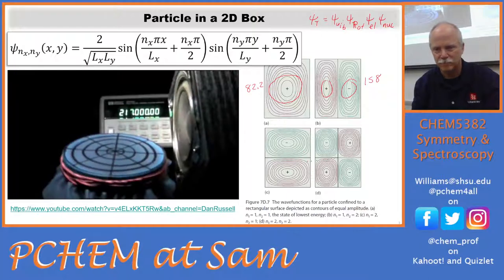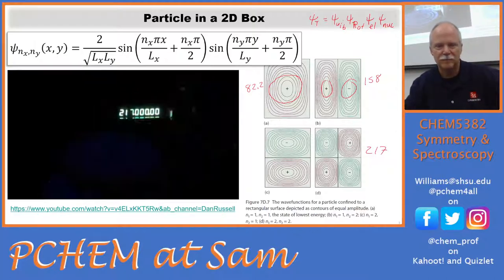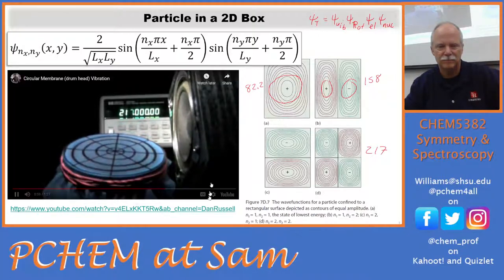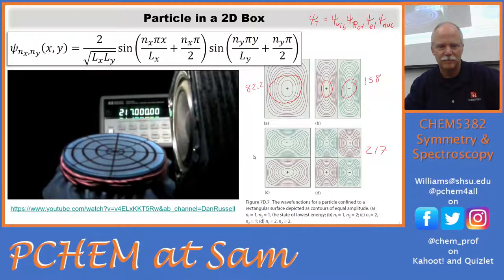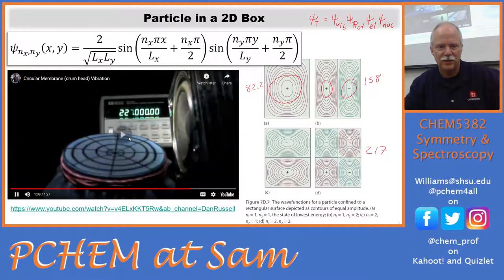Here's the third pattern of the membrane. It's kind of like a cloverleaf pattern — two opposite sides of the membrane move up together, and the adjacent sections move down, so there are four regions that alternate up and down. Here's the fourth pattern, where the center of the membrane moves opposite to the outer ring.